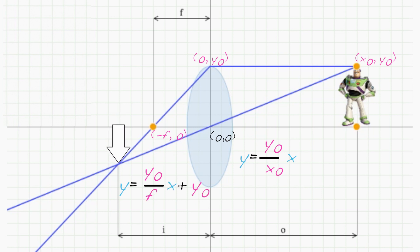To intersect these lines, we set these equations equal to one another. We have y0 over x0 times x equals y0 over f times x plus y0. Then we divide through by y0 to give 1 over x0 times x equals 1 over f times x plus 1.